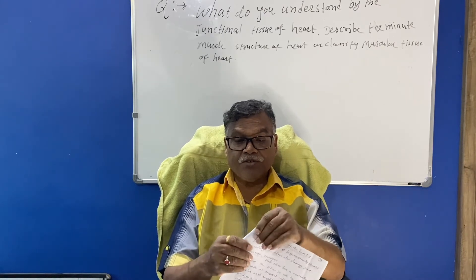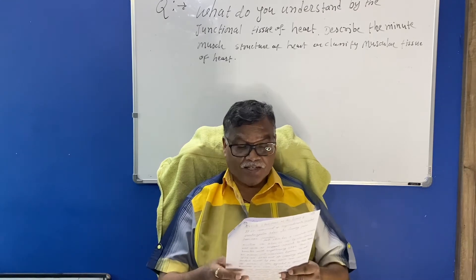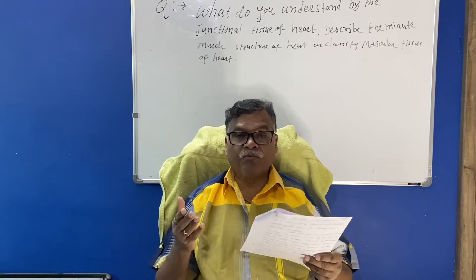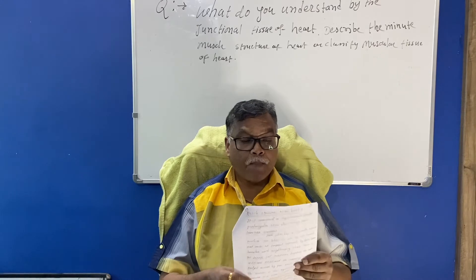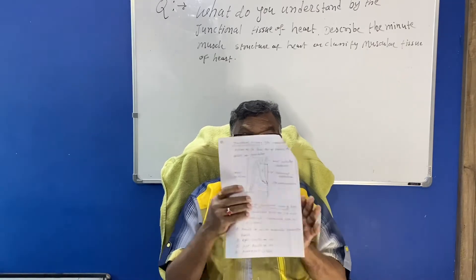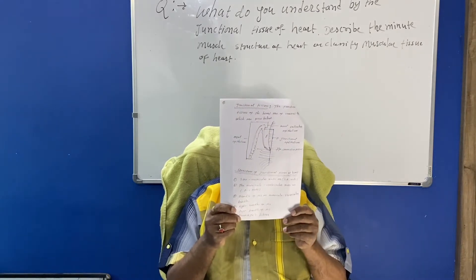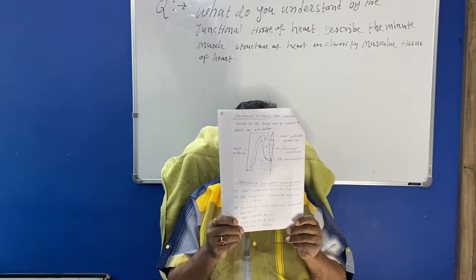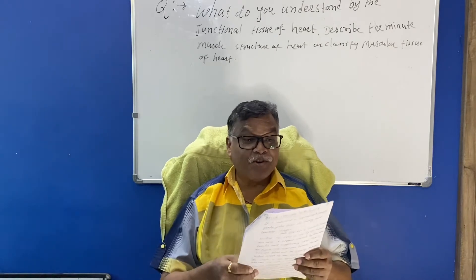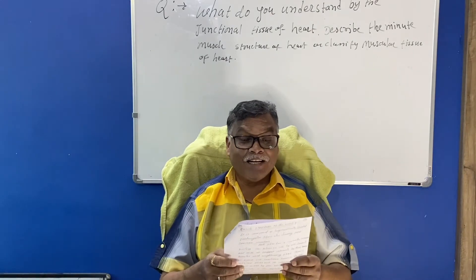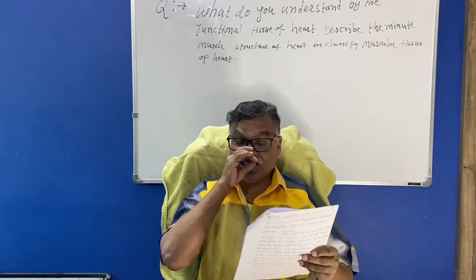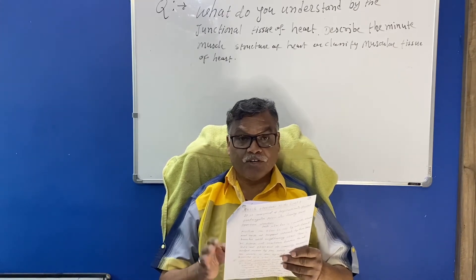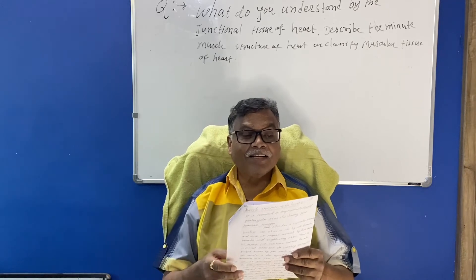Now, you have to draw the diagram of the structure of junctional tissue of heart — you will find it from the book or from the internet. After completing the diagram, give the heading: Structure of Junctional Tissue of Heart.